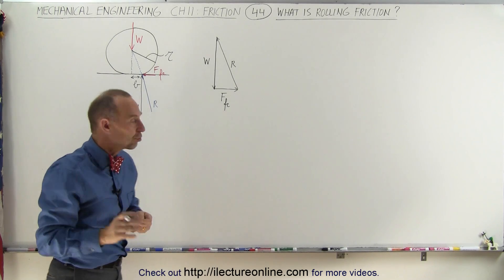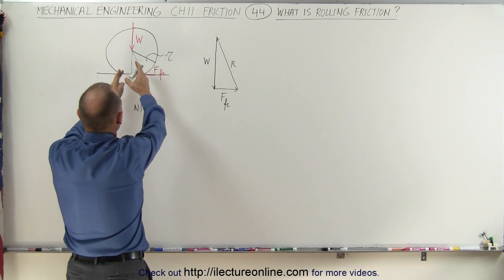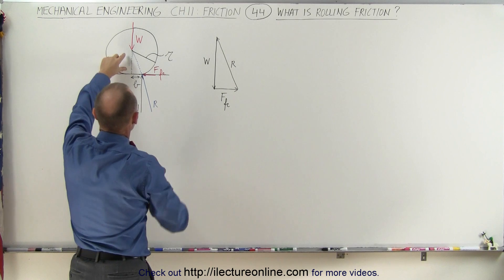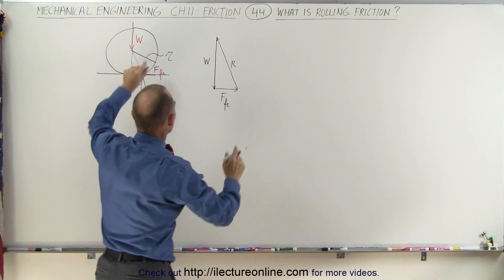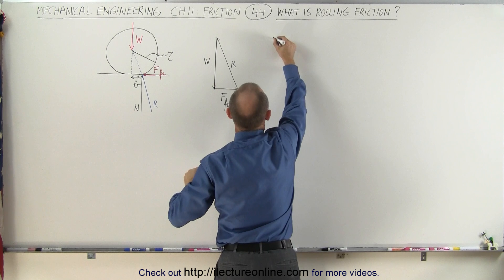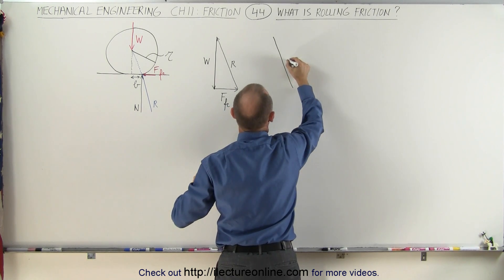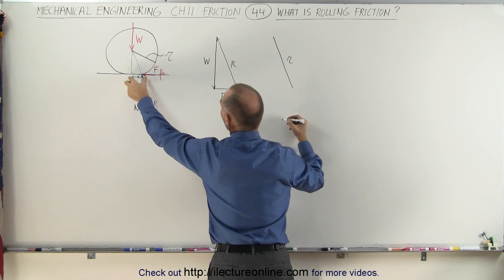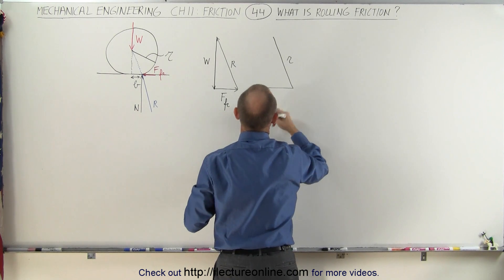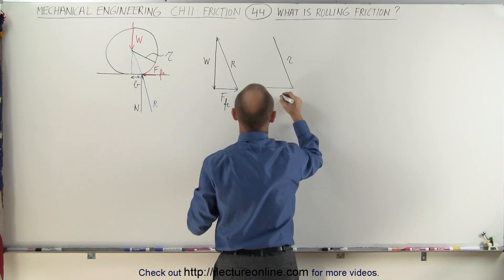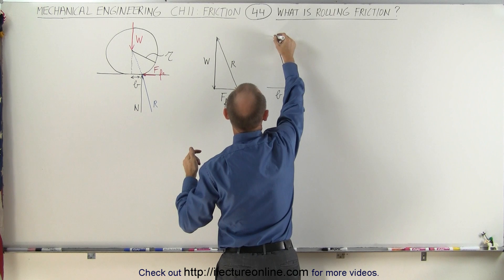We can draw a second triangle that gives us the dimensions, where this would be the radius of the wheel. This is representative of the radius of the wheel, and this is representative of B, which represents the coefficient of rolling friction.